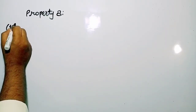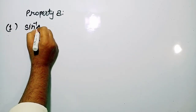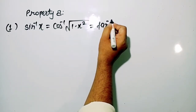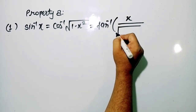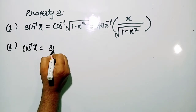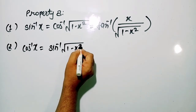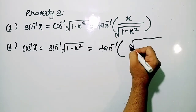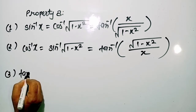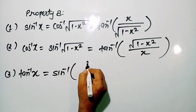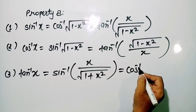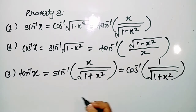Properties number 8. The first one: sin⁻¹ x can be written as cos⁻¹(√(1−x²)) = tan⁻¹(x/√(1−x²)). Similarly, cos⁻¹ x can be written as sin⁻¹(√(1−x²)) = tan⁻¹(√(1−x²)/x). Third, tan⁻¹ x = sin⁻¹(x/√(1+x²)) = cos⁻¹(1/√(1+x²)).